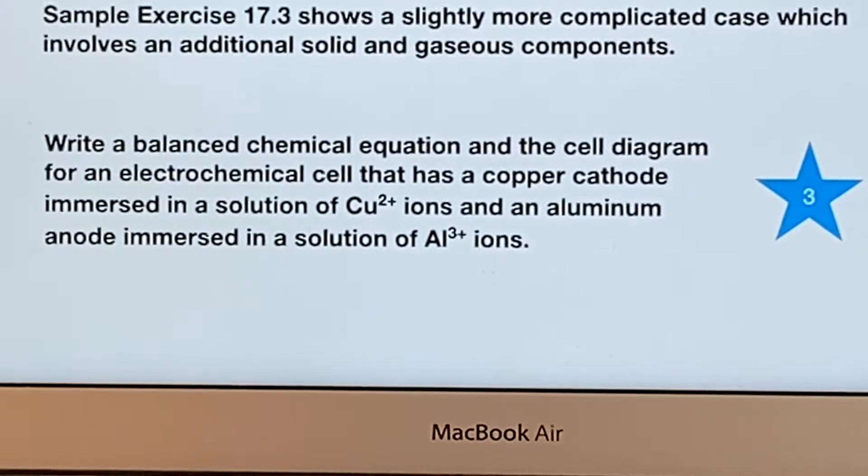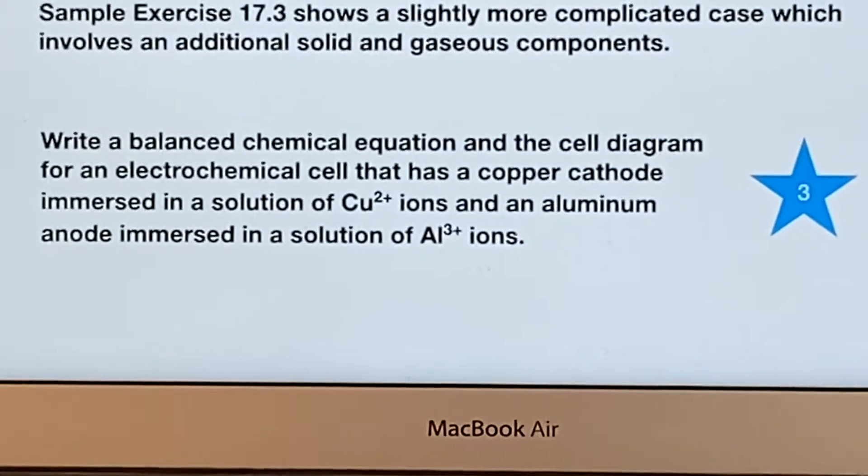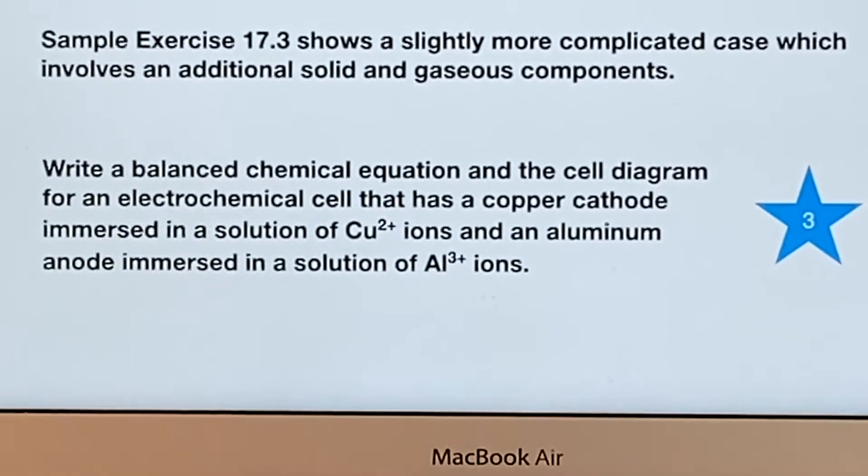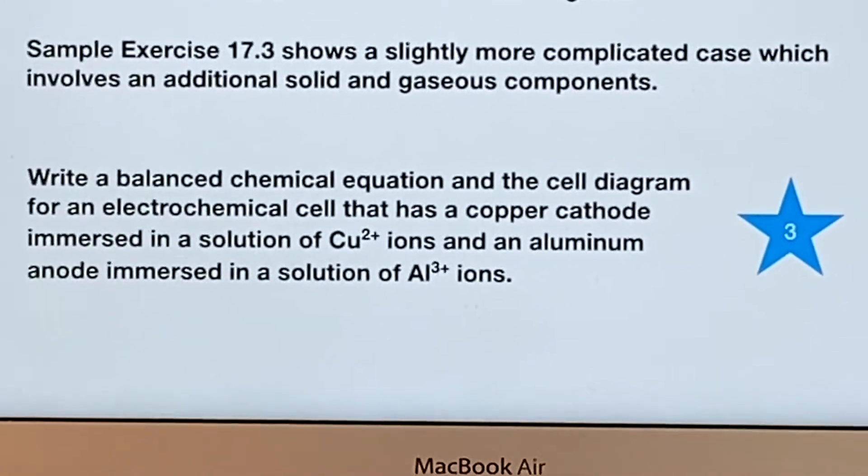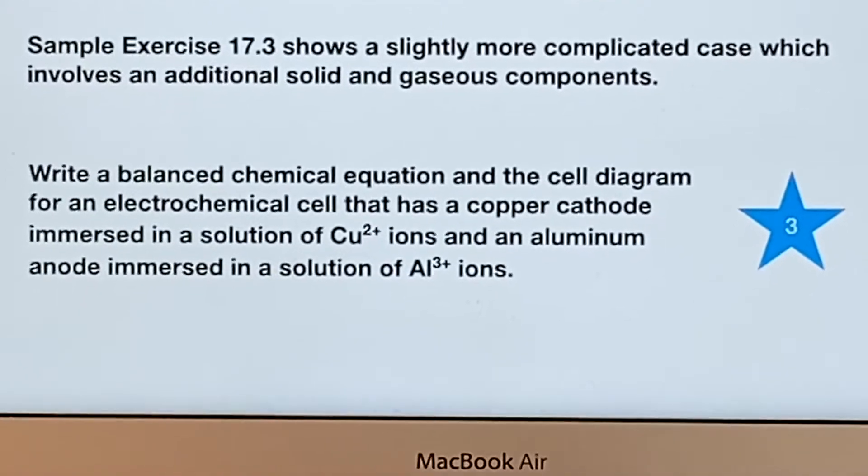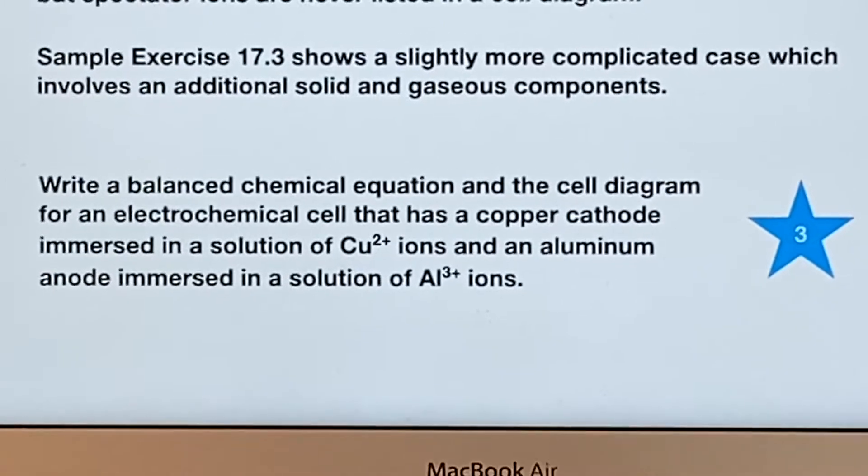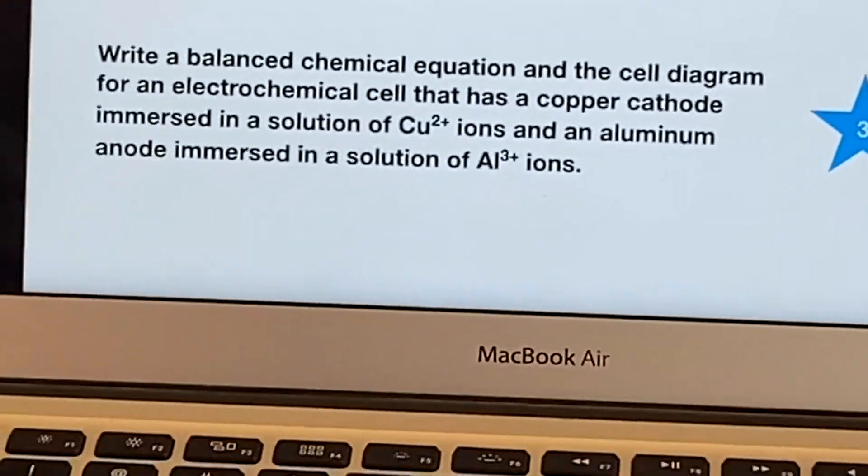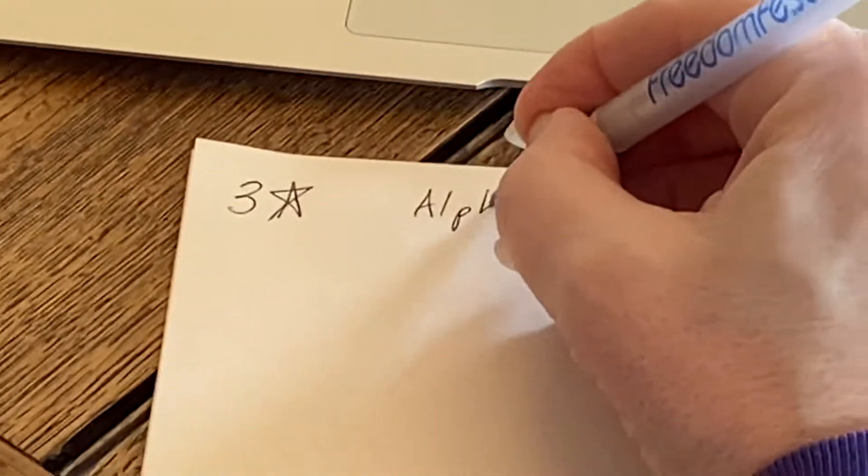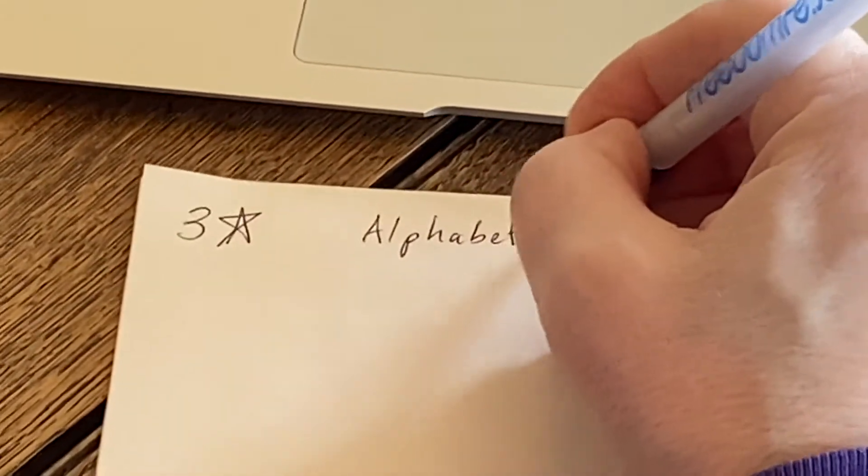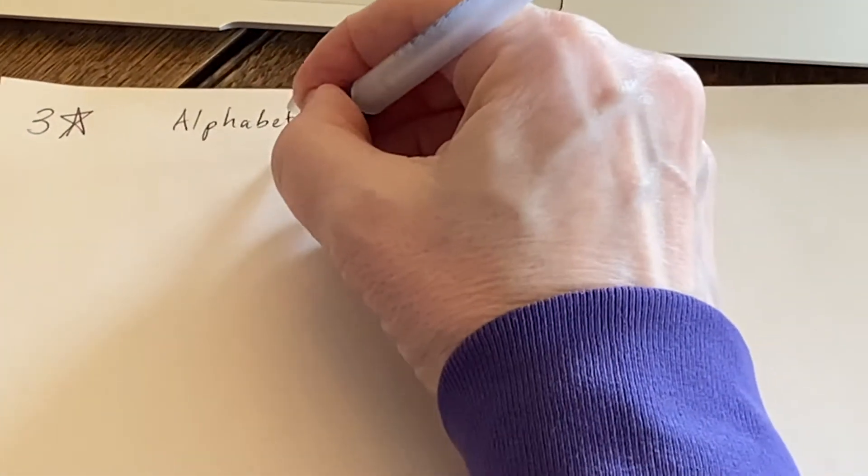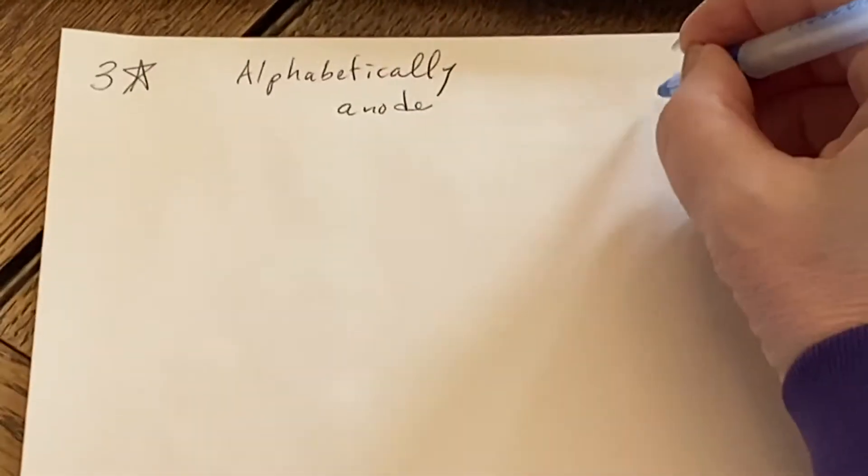We have write a balanced chemical equation and the cell diagram for an electrochemical cell that has a copper cathode immersed in a solution of copper ions and an aluminum anode immersed in a solution of aluminum ions. Remember, you want to do this alphabetically in order to get it set up. So we want to do the anode first and then cathode.